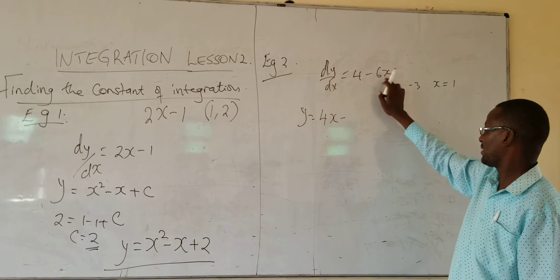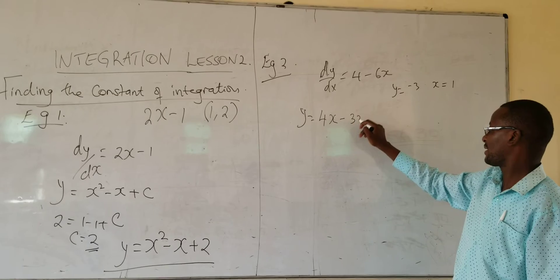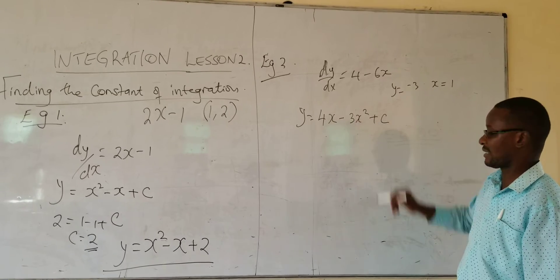So 4x minus... integrate this, you get 3x squared plus a constant C.